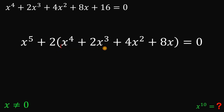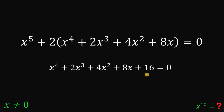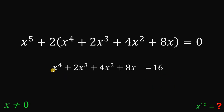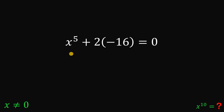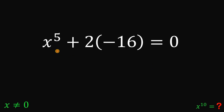Now this is familiar — x raised to the fourth power plus 2x cubed plus 4x squared plus 8x is the same as our given expression. So let's take the original equation and subtract 16 from both sides. That gives us x raised to the fourth power plus 2x cubed plus 4x squared plus 8x equals negative 16. We can now replace that whole expression with negative 16.